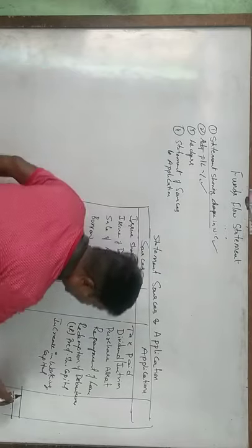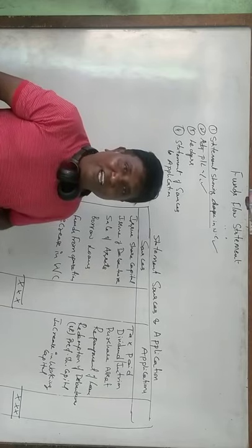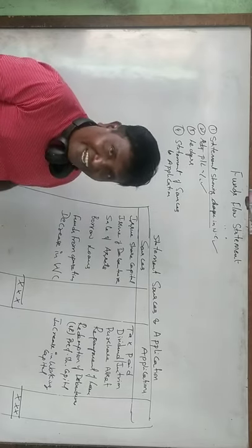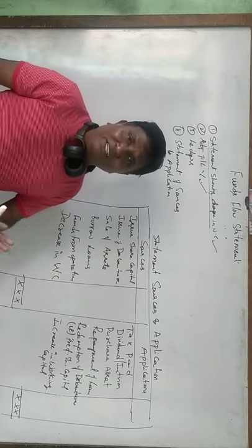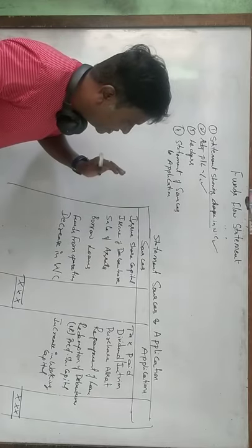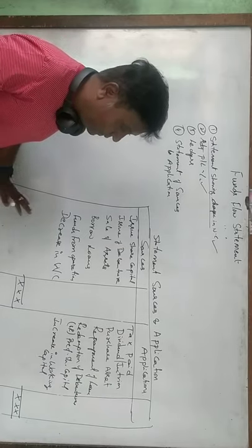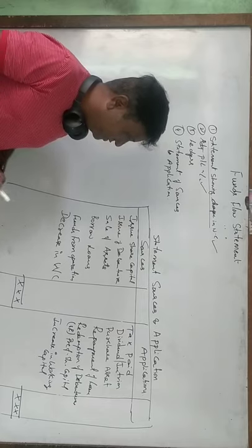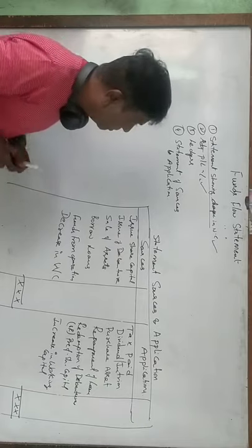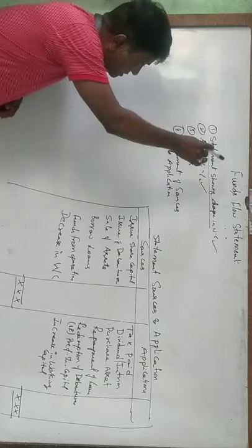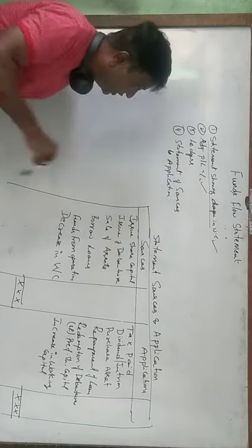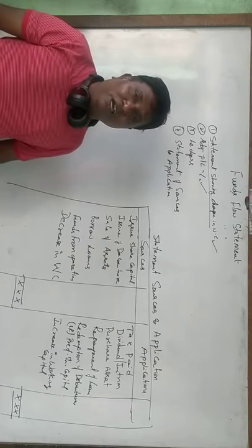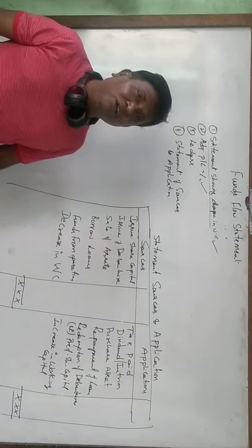These sources should equal these applications — if the statement doesn't match, we might have made a mistake in some step. This is the proforma for the statement of sources and applications; to the maximum, only these items will come. In the next class, I will solve a 14-mark question preparing all four steps: statement of changes in working capital, some ledger accounts, and statement of sources and applications. Please share these videos with your friends and subscribe to the channel.